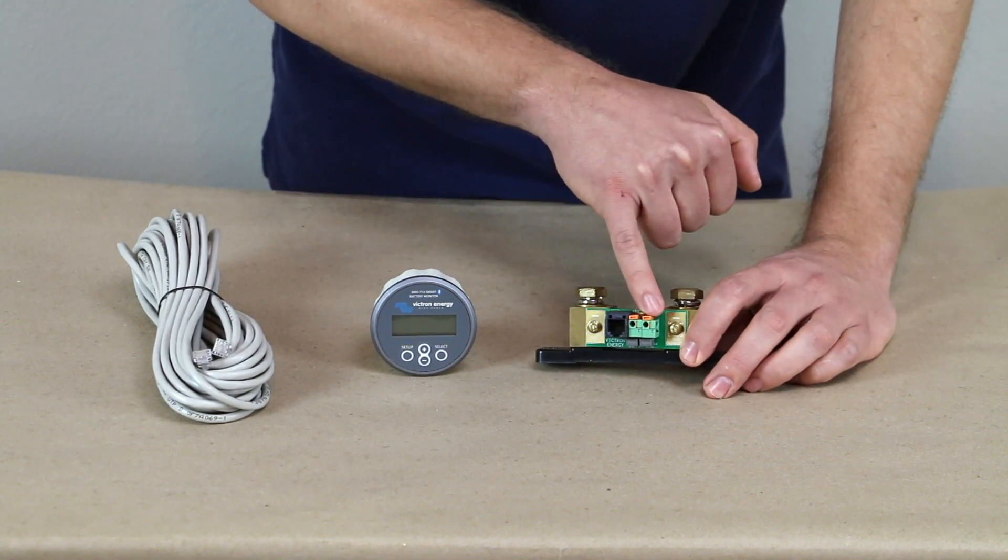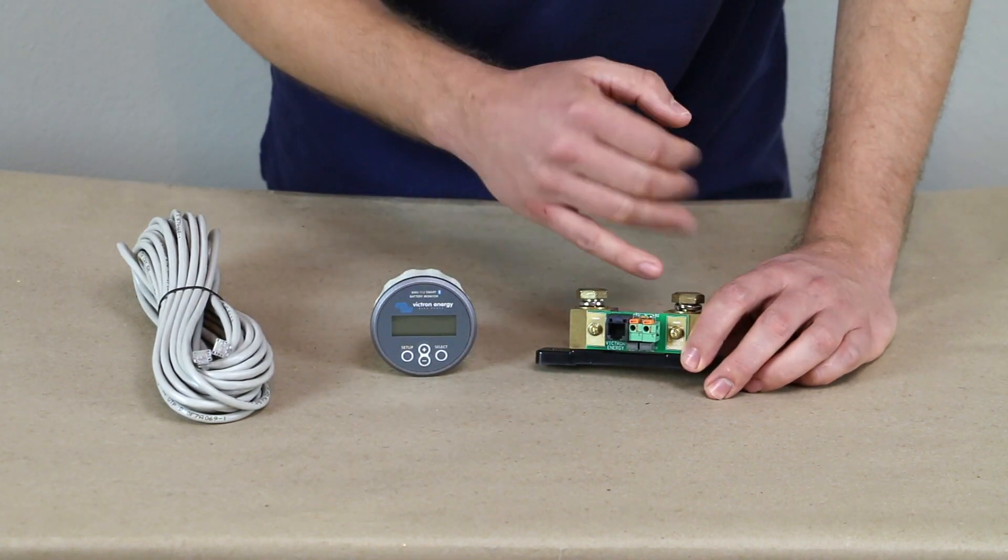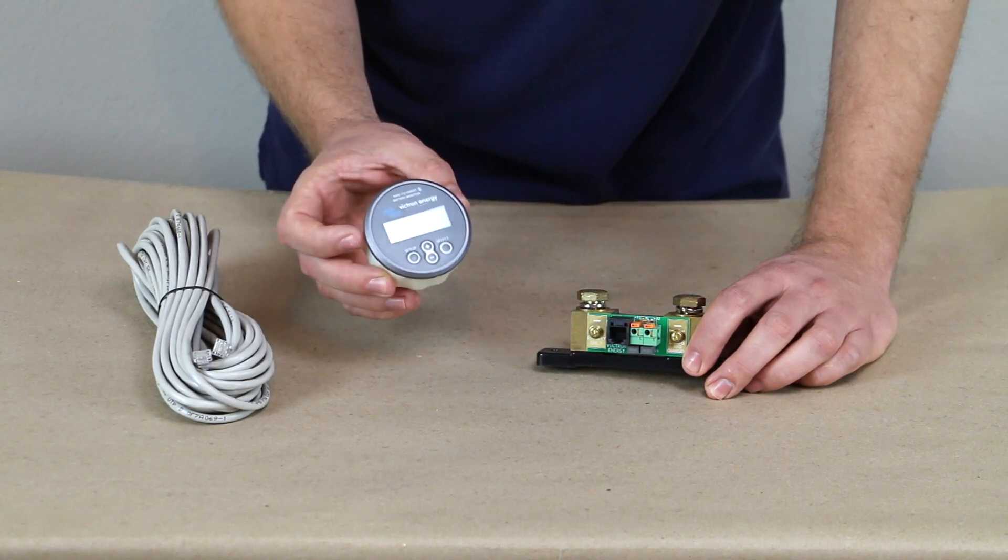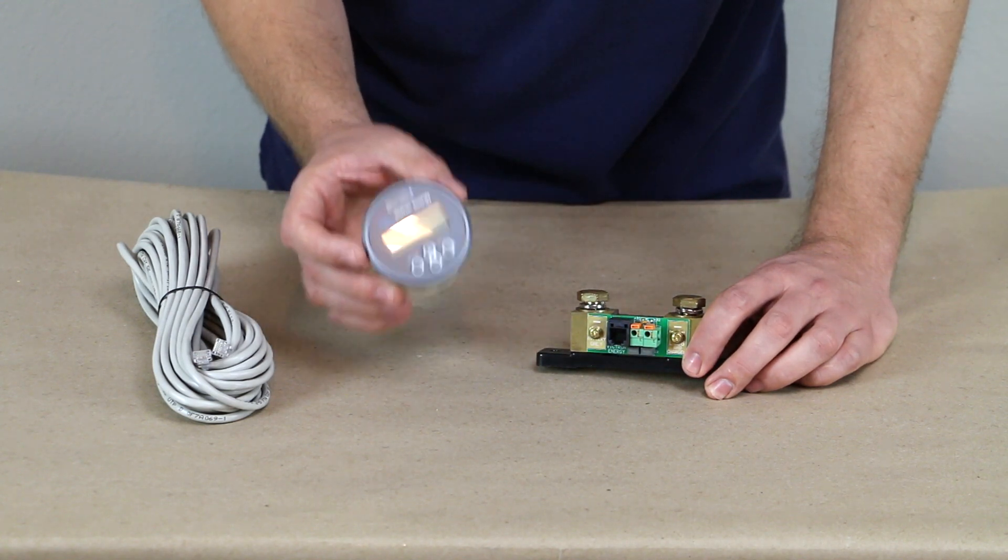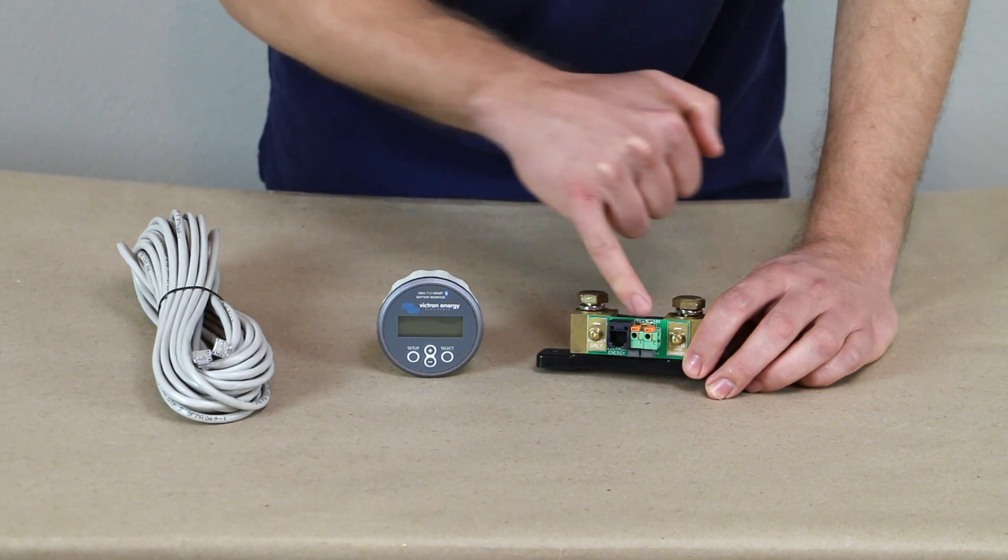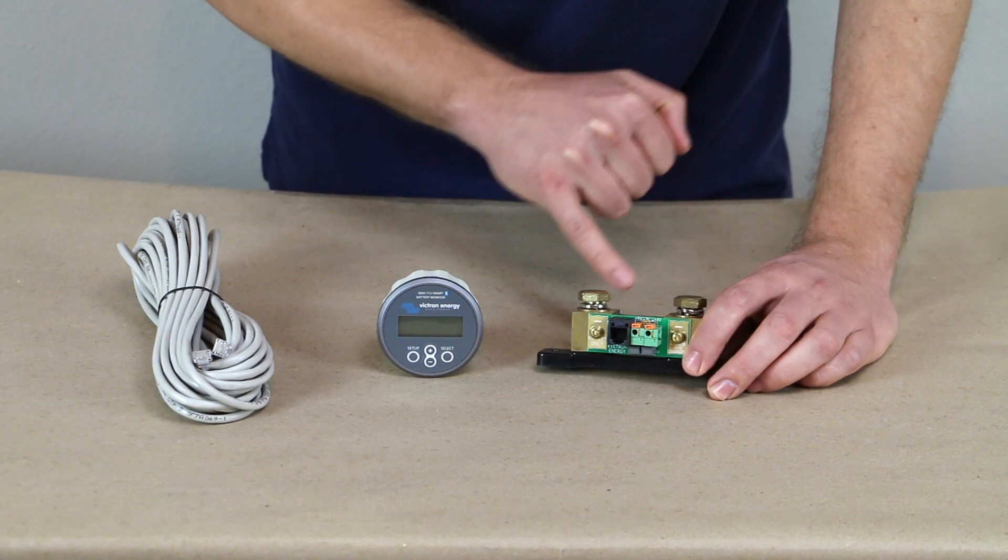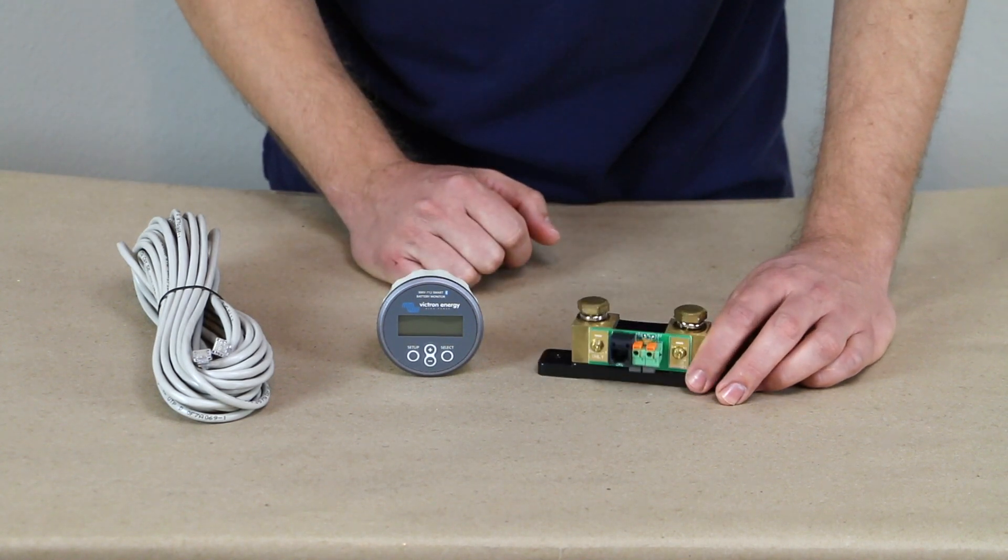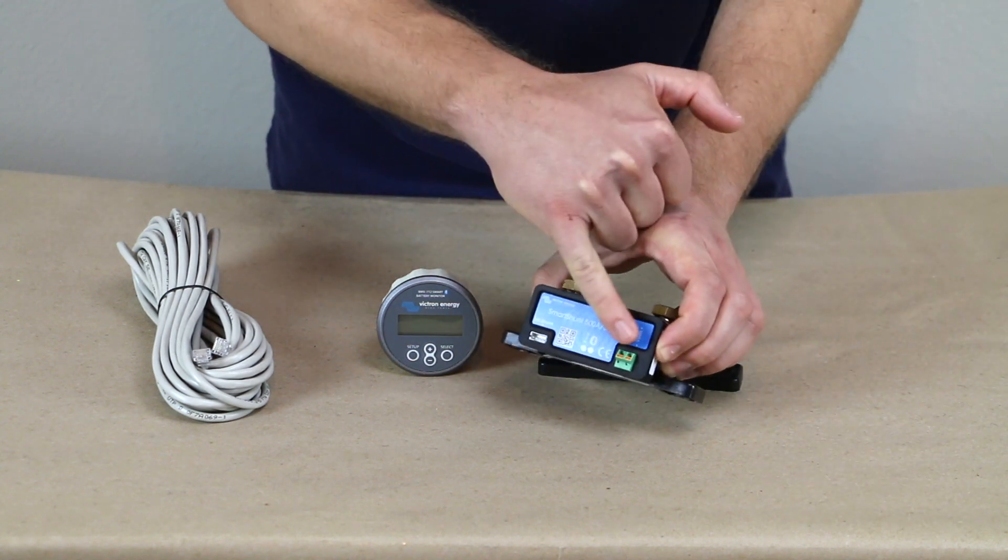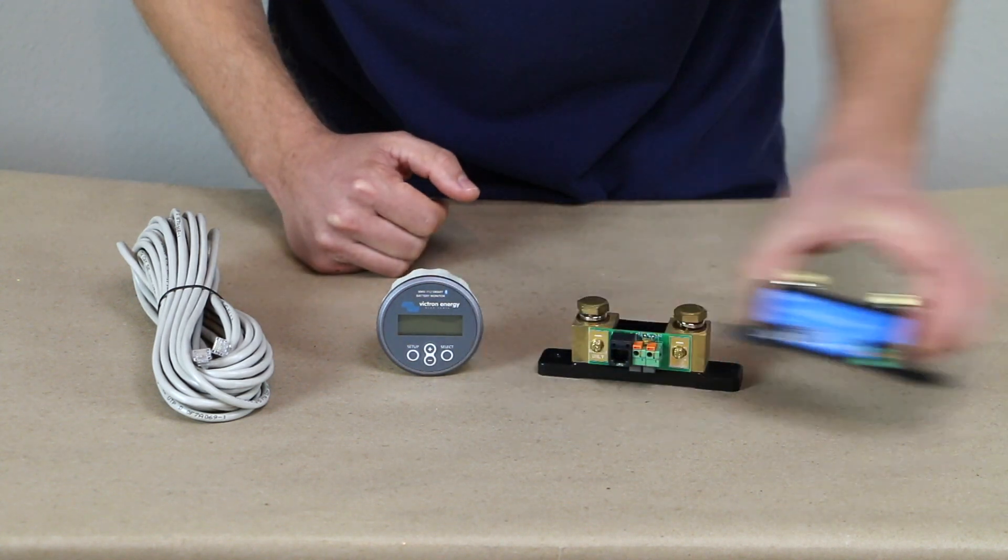And the last thing you can program it to do is take a battery temperature. So if you wanted a readout of what your battery temperature was on this screen, you could plug in a temperature sensor there at that second input as well. And you'll notice with the smart shunt, it also has those same two inputs and that same capability.